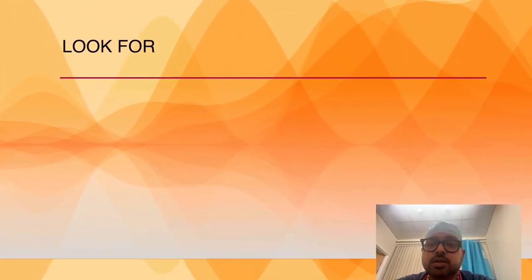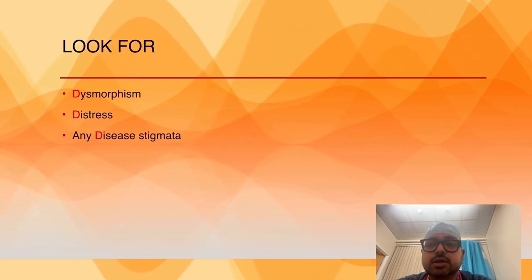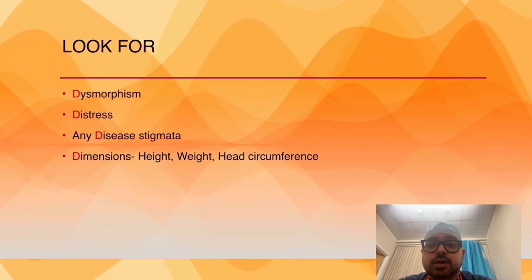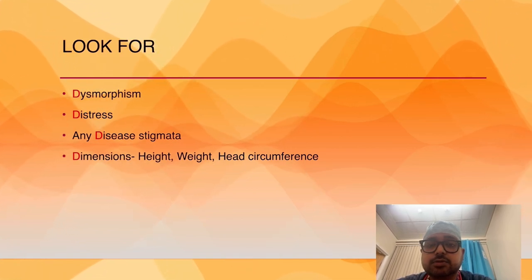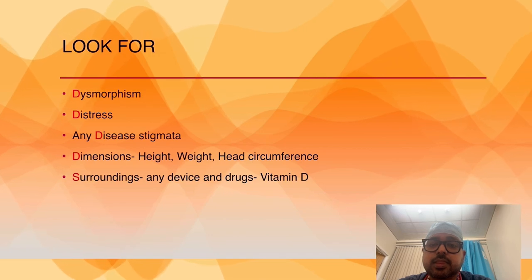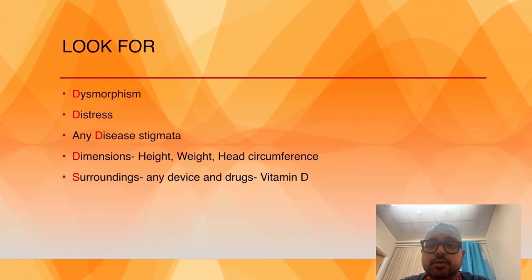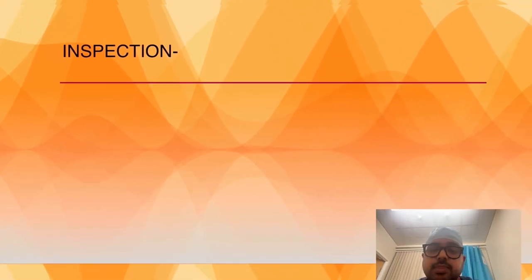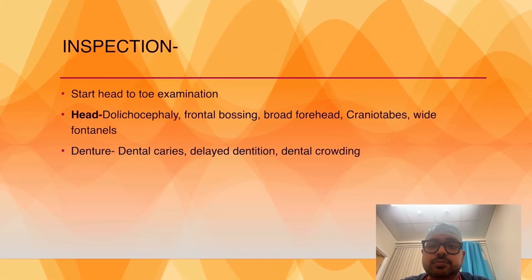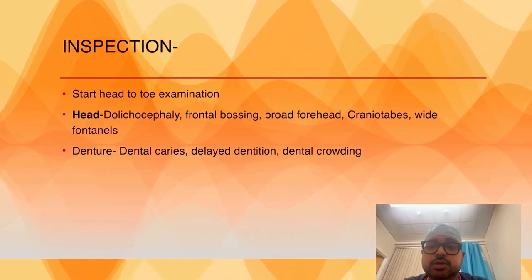Before you start, look for any dysmorphism, any distress, any disease stigmata. Measure height, weight, and head circumference and plot them in an age-appropriate growth chart. Look around the surroundings, look for any devices or any drugs like vitamin D supplements or phosphate supplements. Start inspection from head to toe.